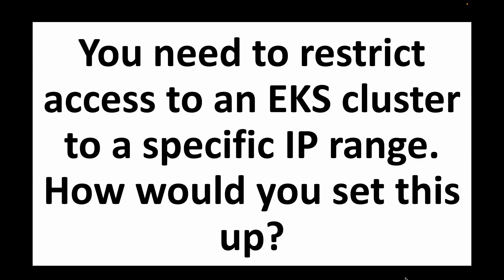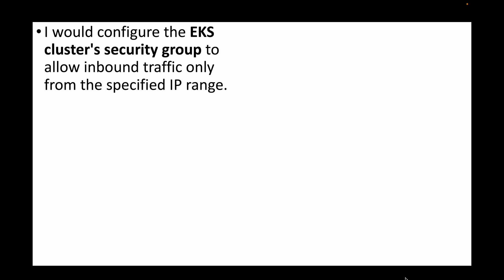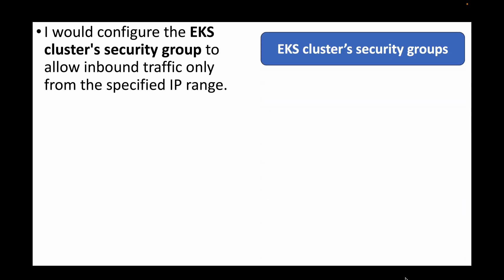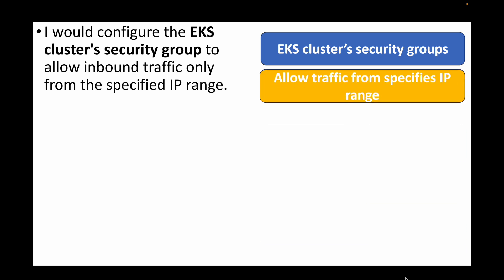The next question is: you need to restrict access to an EKS cluster to a specific IP range. How would you set this up? For this we can control that using the EKS cluster security group in AWS, configuring inbound traffic rules to allow only that specific IP range.